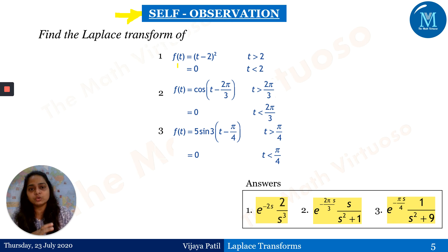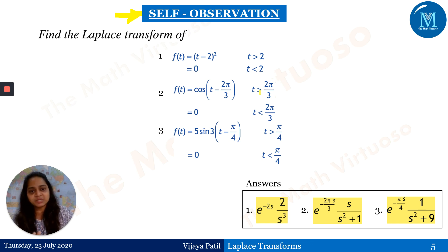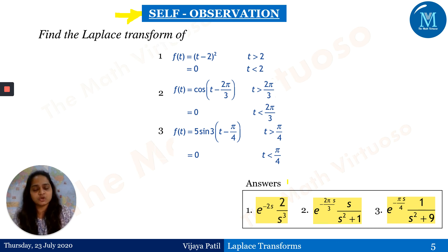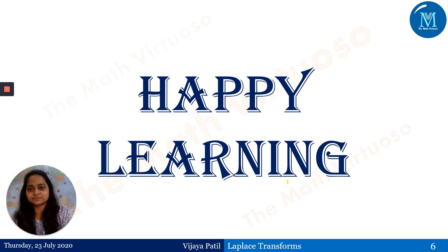Don't get confused by the notation — whether the function is called g(t) or f(t), understand the structure: a function defined for t greater than some value a, and zero otherwise. Similarly, another example is defined for t greater than 2π/3 and zero for t less than 2π/3. Recognize these as Second Shifting Theorem problems and apply accordingly. Answers are provided — cross-check and brainstorm. Come up with your own notes. Thank you, happy learning.